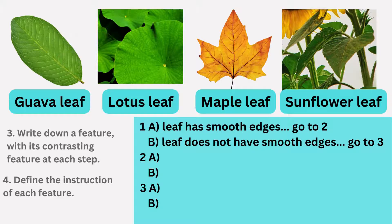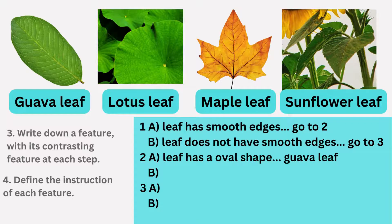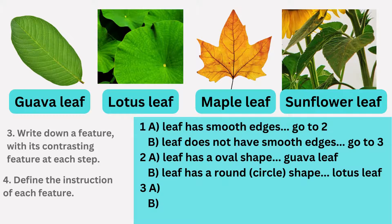For step two, we compare the leaves with smooth edges — the guava and lotus leaves — focusing on distinguishing features such as shape and vein patterns. We differentiate based on shape: in 2a, we write that the leaf has an oval shape, identifying it as the guava leaf, and in 2b, we write that the leaf has a round shape, identifying it as the lotus leaf.